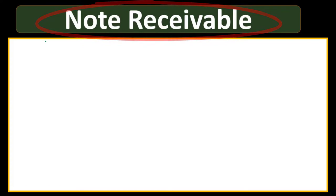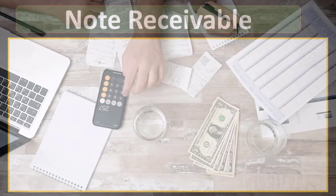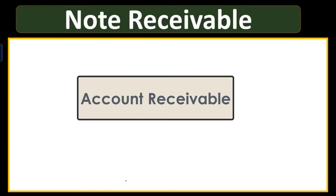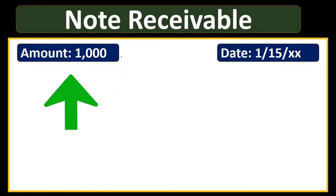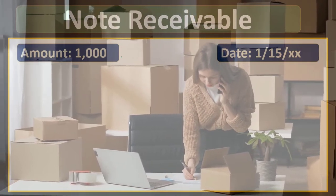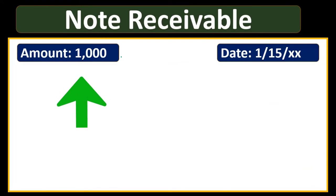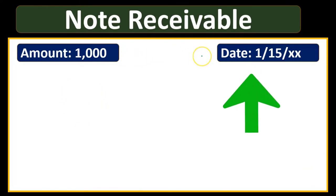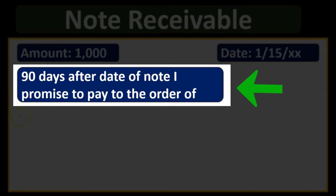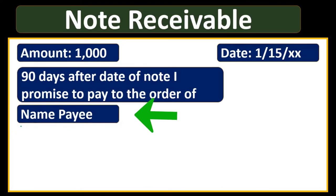A couple of critical components will typically be in any note receivable. We'll usually have formal written documentation when it's a larger dollar amount, we're charging interest, and there's a longer time frame involved — more than the normal 30 or 60 days of an accounts receivable. We're typically going to have the amount of the note: if we sold something with a sticker price of $1,000, there's going to be a promise by the customer to pay us for what they purchased. Then we'll have the date of the note, and the due date — often written as '90 days after date of note, I promise to pay to the order of' followed by the name of the payee.